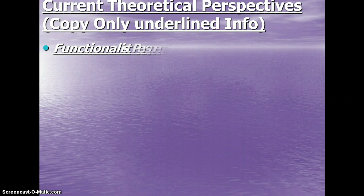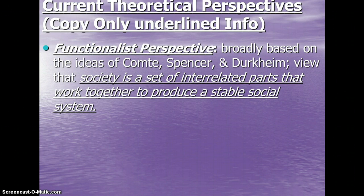These are the current theoretical perspectives — if it's underlined, write it down. Write the functionalist perspective. That is broadly based on the ideas of people like Comte, Spencer, and Durkheim. That is the view that society is a set of interrelated parts that work together to produce a stable social system. Basically, each component of a society has a function — it has a purpose — and when those things function properly, then you have a stable social system. This is a way of analyzing society by looking at how each part functions.